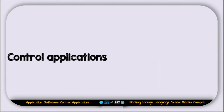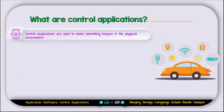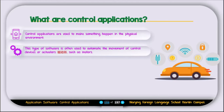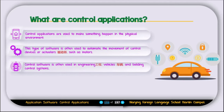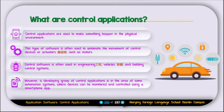The next type of application software is called control applications. Control applications are used to make something happen in the physical environment. This type of software is often used to automate the movement of control devices or actuators such as motors. Control software is often used in engineering, vehicles, and building control systems. A developing group of control applications is in the area of automated systems where devices can be monitored and controlled using a smartphone app.